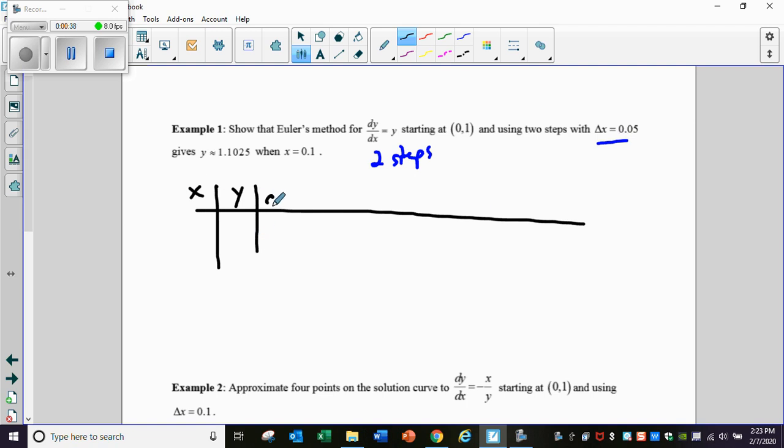We now have the slope, which is our dy/dx. We have the tangent line. We have the new x value, which is the old x value plus delta x, and we have the new y value.